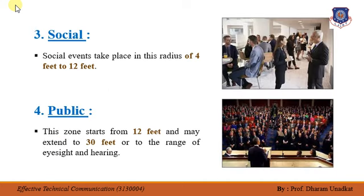The third zone is social. Social events take place in a radius from 4 feet to 12 feet. In this zone, relationships are more official. This situation involves less emotion and more planning. The number of people decides whether it should be a sitting-sitting or sitting-standing position of communication.